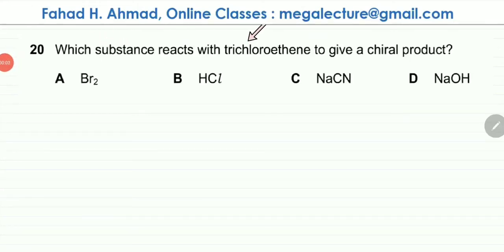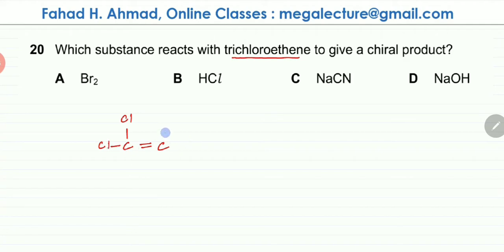The question asks: which substance reacts with trichloroethene to give a chiral product? We need to first figure out what trichloroethene is. Ethene has two carbon atoms with a double bond. Trichloro means there are three Cl atoms attached to it, with a hydrogen on one side. We need to go through the reactions one by one and figure out whether a chiral product could be formed or not.